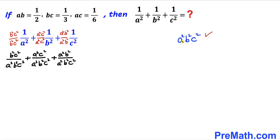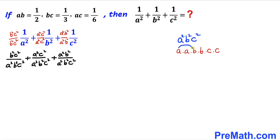Now let's manipulate the numerator terms. a² can be written as a times a, b² as b times b, and c² as c times c. Rearranging, we group them as: a times b, then b times c, then a times c.